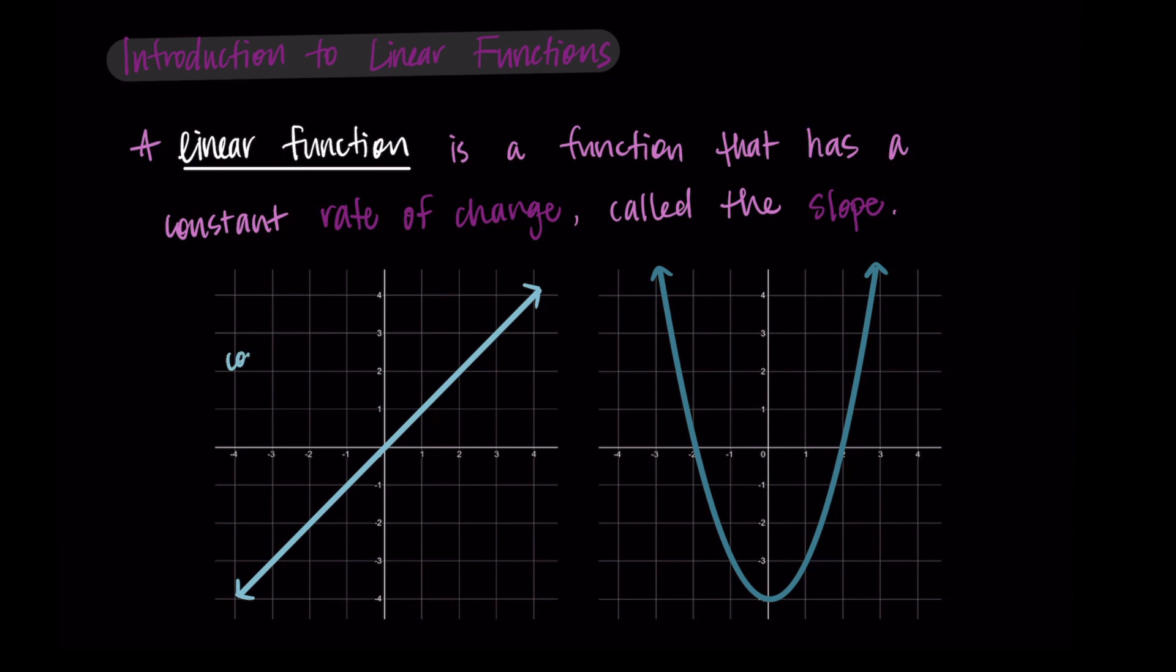The graph on the left is what we are going to have as our linear function. So this is a function with a constant rate of change.